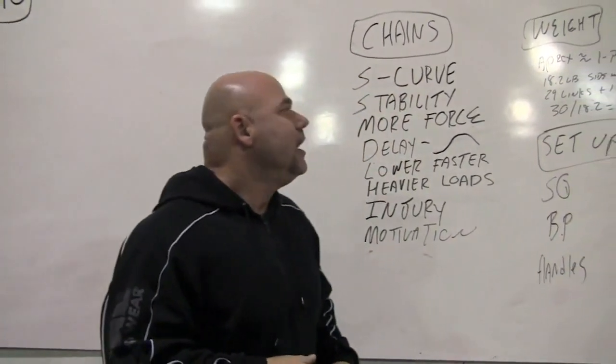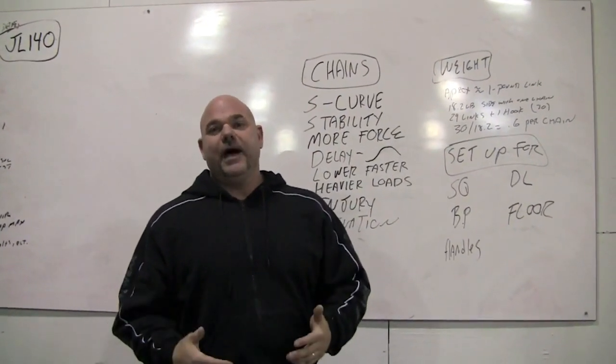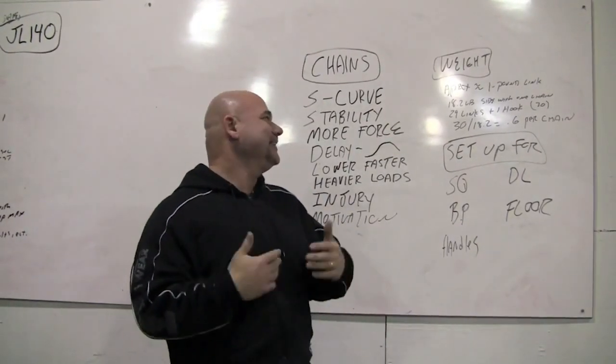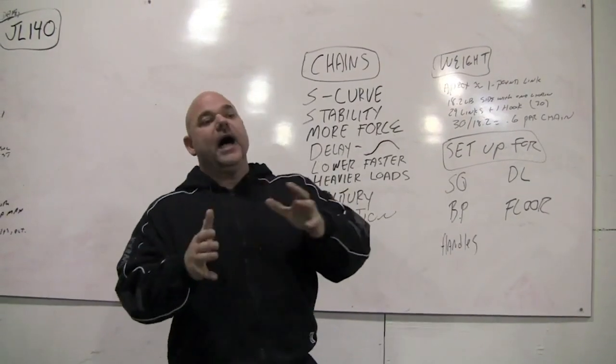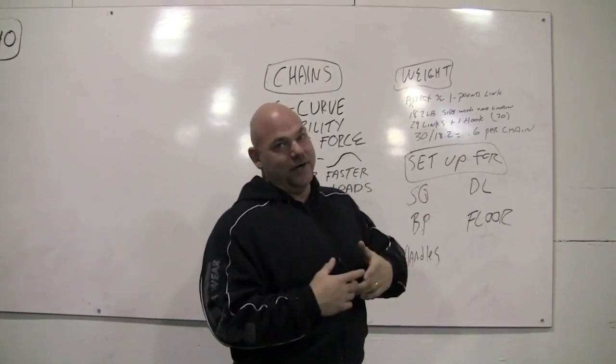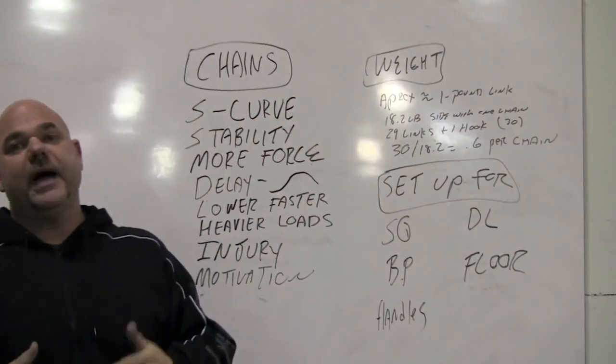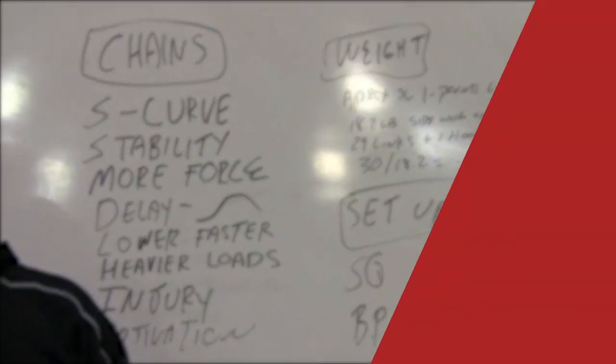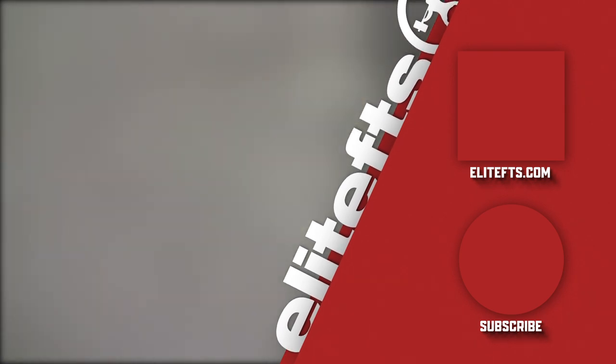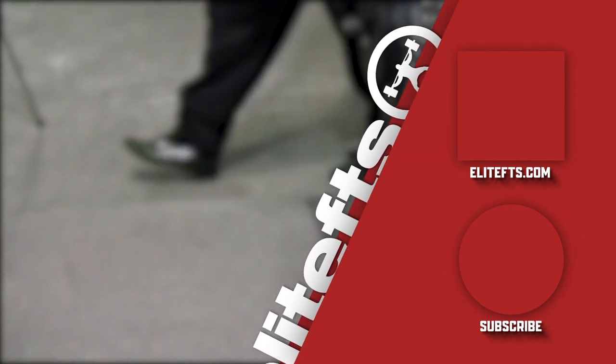With the chain setup that we have, the easiest thing to do is to just say each link weighs approximately one pound—that's the no-brainer powerlifter side of me. But if you want to know exactly what it weighs, each side of the chain setup is going to weigh 18.2 pounds. There's 29 links in one hook, so figure 30 hooks divided by 18.2, we're dealing about 0.6 pounds per chain. This will make more sense when I start showing how to hook the chains up and what the actual deloading is. So for ease of mathematics, we're just going to say that each link weighs one pound.